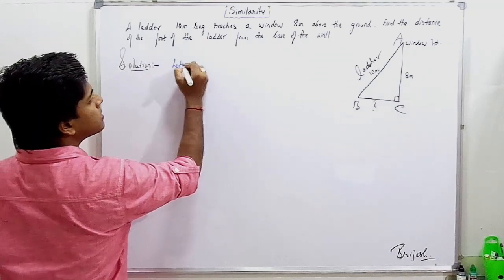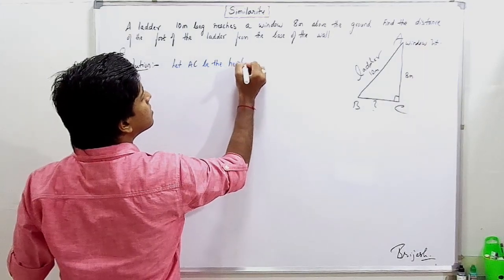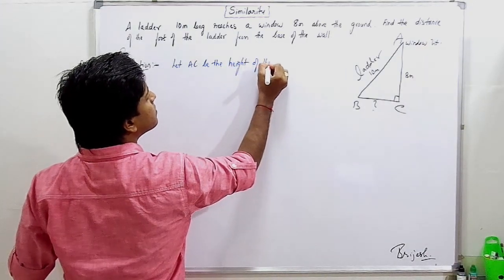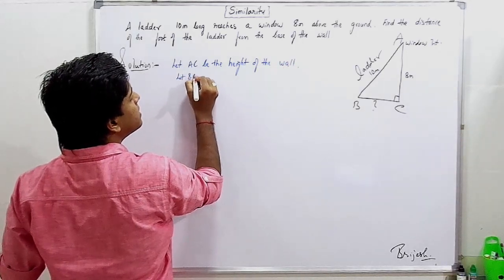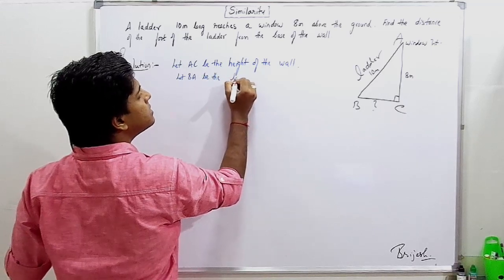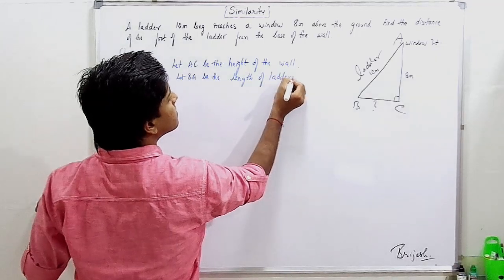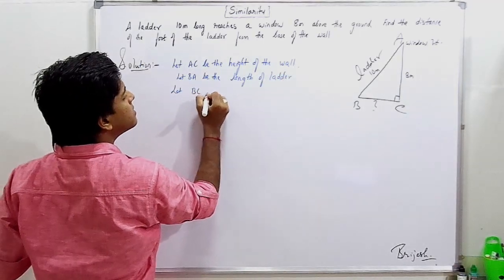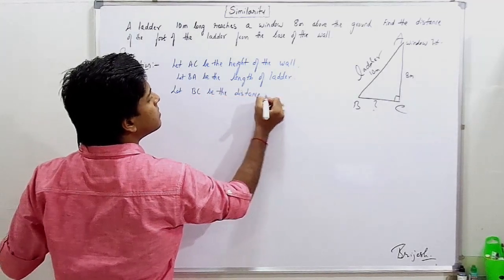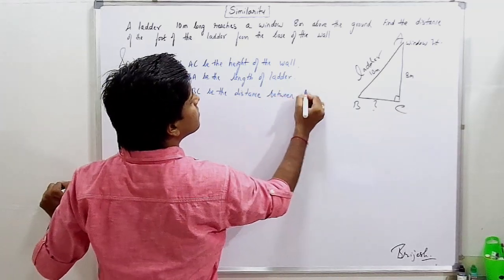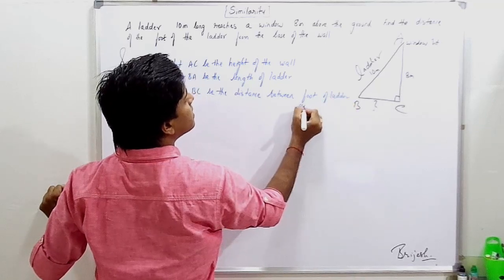Let AC be the height of the wall. Let BA be the length of the ladder. Let BC be the distance between foot of ladder and wall.